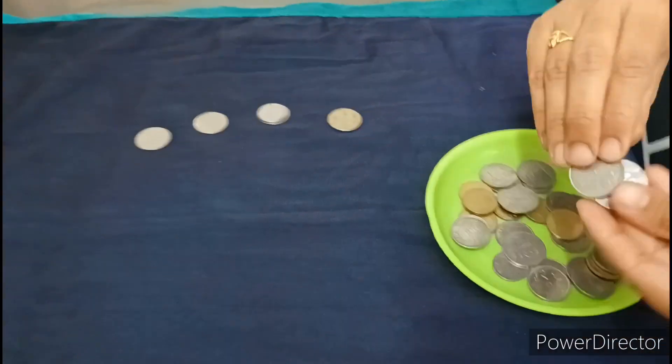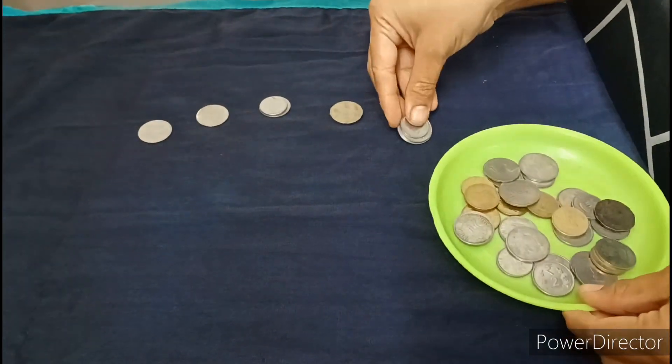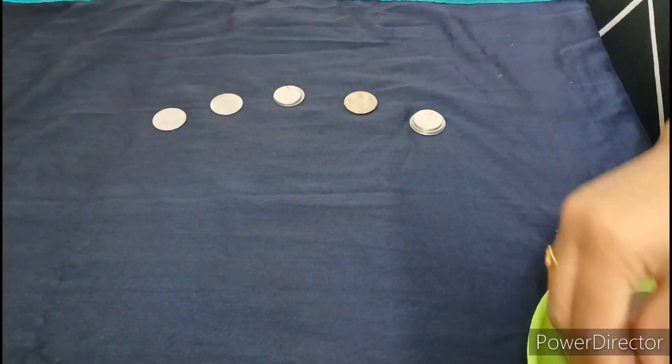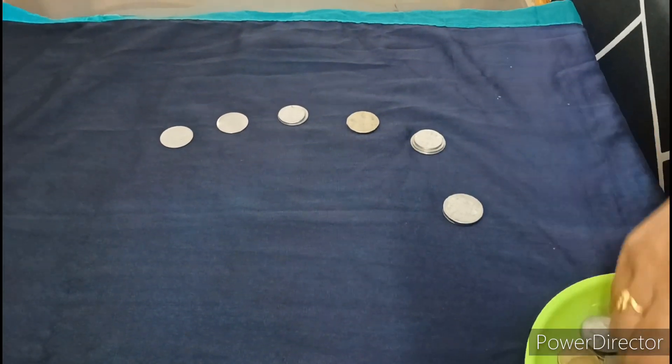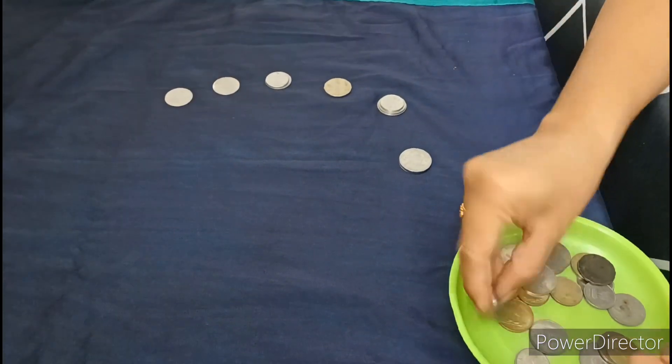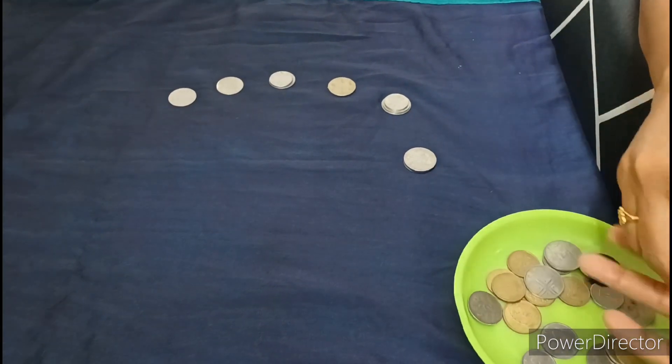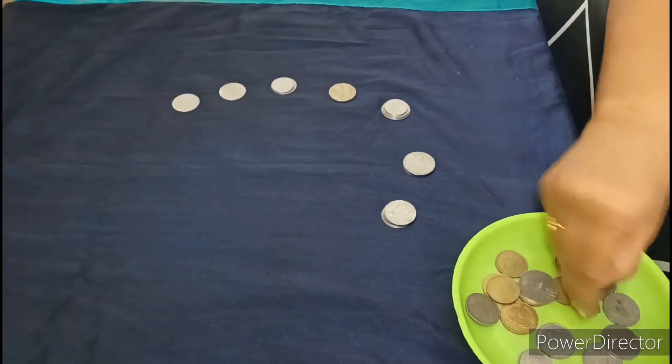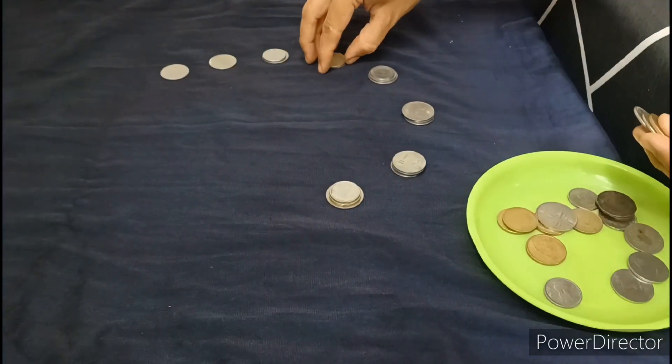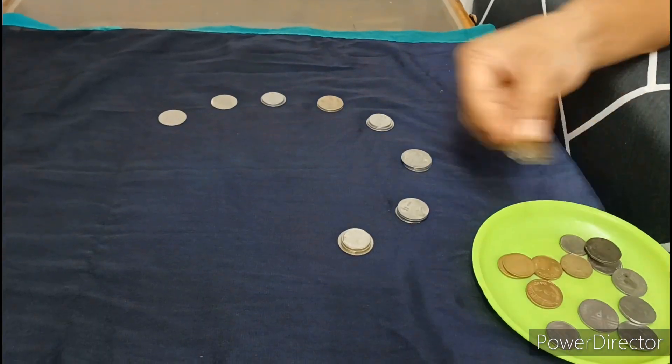Place coins at each clock position using 1 rupee, 2 rupee, and 5 rupee coins at different hours. Arrange them around the clock and count the total number of coins used.